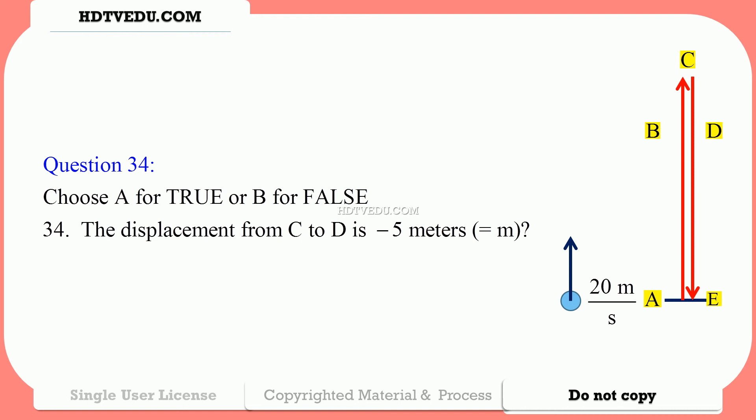Question number 34. Choose A for true, B for false. The displacement from C to D is negative 5 meters. C is the initial position, D is the final position, and D is below point C. The displacement is negative because the final position is below the initial position. Position of D is 15 meters above point A; position of C is 20 meters above point A. So 15 minus 20 equals negative 5.